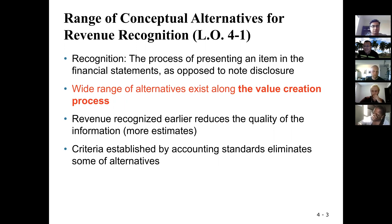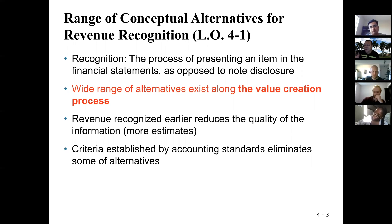For example, if I'm the tutor and my student paid me money for next year's service, if I recognize it this year, that's unfair because I'm recognizing the revenue too early — I haven't done the job yet. So in my income statement, it shows a good number of revenue, but investors should not believe the number because I'm recognizing revenue too early. The quality of the information is reduced.